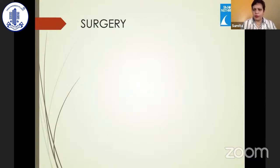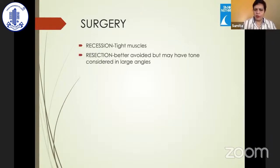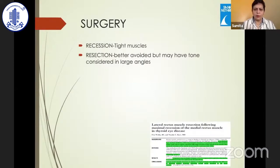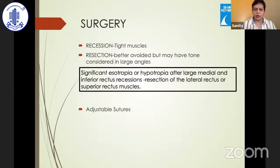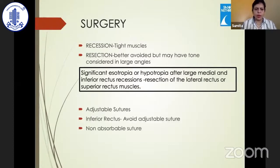That needs to be discussed with the patient. Surgery usually involves recession of the tighter muscles; resection is better avoided but may need to be considered for large angles. Sometimes resections are employed for significant residual esotropia or hypotropia after muscle recession. Adjustable sutures are somewhat controversial because they can cause late overcorrections and muscle slippage is common with bulky muscles. For inferior rectus specifically, the consensus is to avoid adjustable sutures; non-absorbable sutures probably give better surgical results.